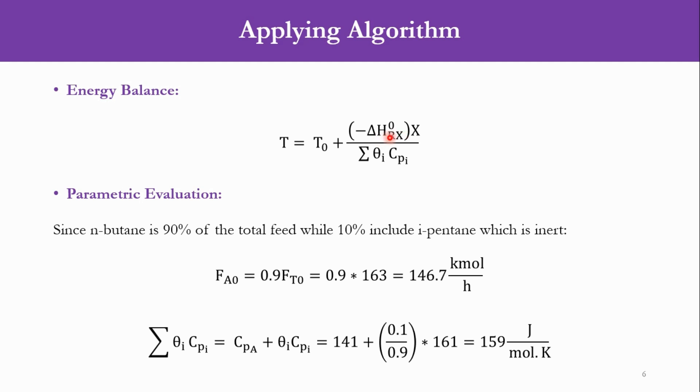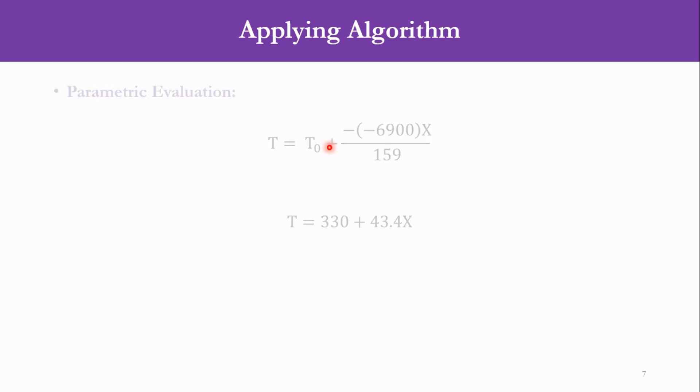We already know the value of delta H and the value of T0, so we can simply say T equals T0 plus minus into -6900 over 159 into X and we will get T equals 330 plus 43.4 into X. So this is the simplified expression which we have derived after going through initial calculations.